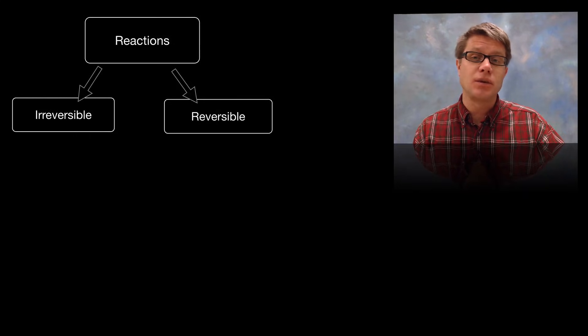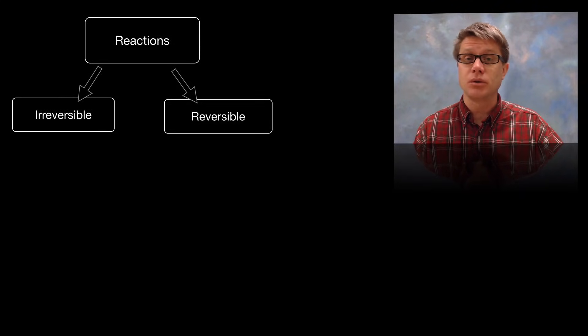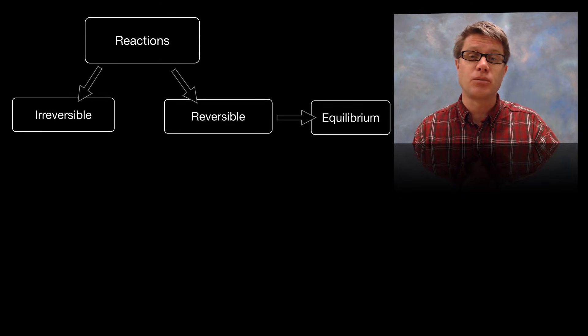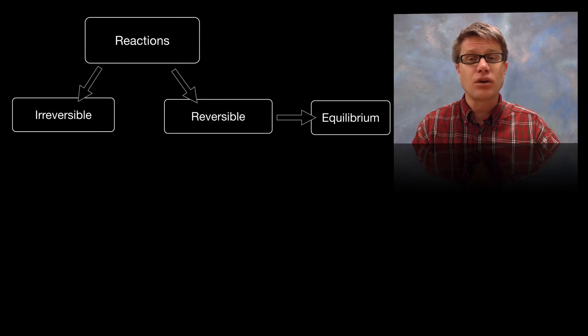Reactions can either be irreversible or reversible. In an irreversible reaction the arrow goes from left to right, reactants become products. But in a reversible one, reactants become products and products become reactants. It eventually hits something called an equilibrium state, where even though reactants are becoming products and products reactants, the sum amount is not changing.